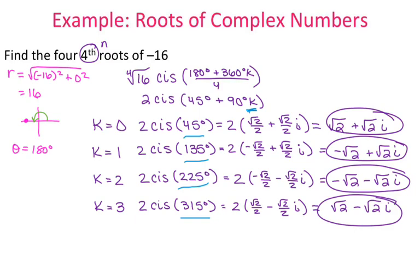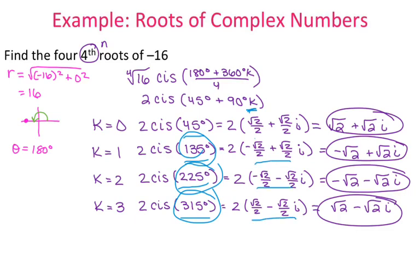To get the answers, I simplify the cosine i sine form, leaving the 2 in front for now. Cosine of 45 degrees is 0.707, which is root 2 over 2, and sine of 45 is also root 2 over 2. I do the same for 135, 225, and 315 using my calculator. Then I distribute the 2 — but since all those fractions are divided by 2, and I'm multiplying by 2, they cancel. That leaves us with the four fourth roots of negative 16.